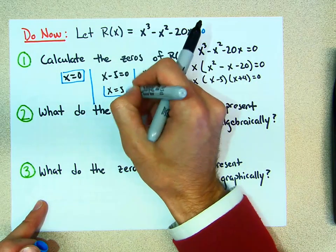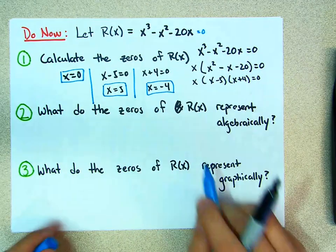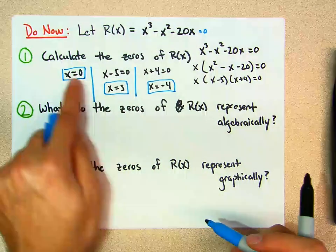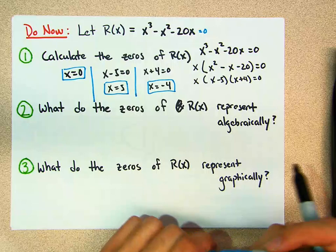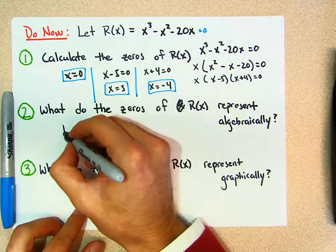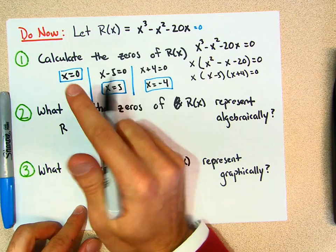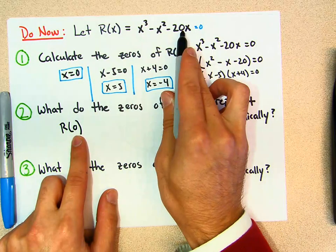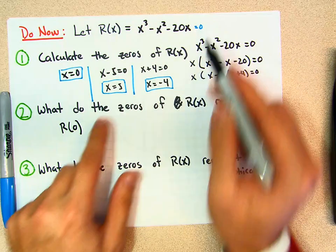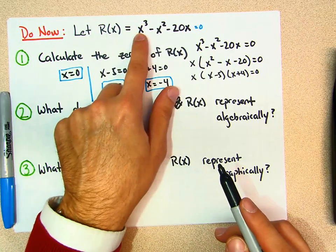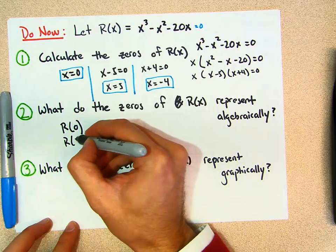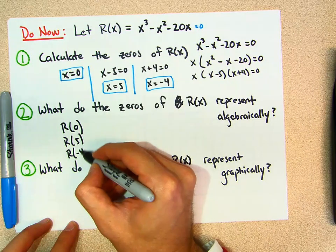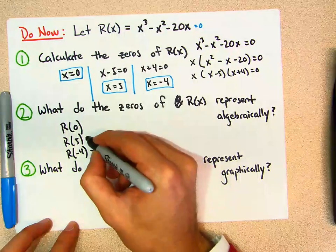Notice that these are the zeros of r of x. What does that mean algebraically? If I take r of zero — if I put zero into this function — I better get zero. If I take five and put it into the function, I better get zero. If I take negative four and put it into the function, it better be zero.